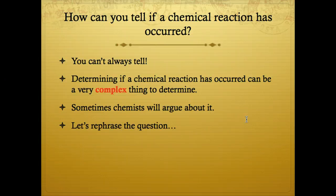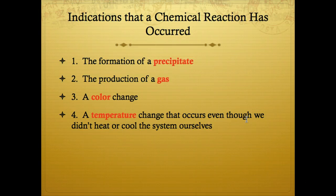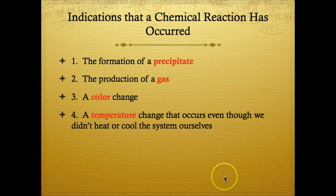How can you tell if a chemical reaction has occurred? You can't always tell. Determining if a chemical reaction has occurred can be a very complex thing — sometimes chemists will argue about whether a chemical reaction has actually occurred. Indications that a chemical reaction has occurred would be: the formation of a precipitate, the production of a gas, a color change, or a temperature change that occurs even though we didn't heat or cool the system ourselves. Note, all of these are indications, not proofs that a chemical reaction has occurred.